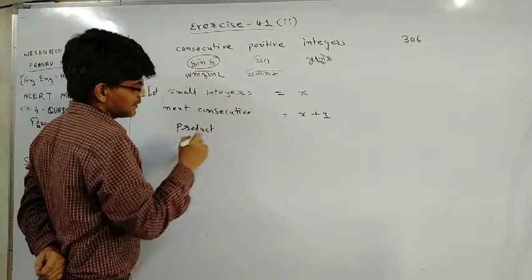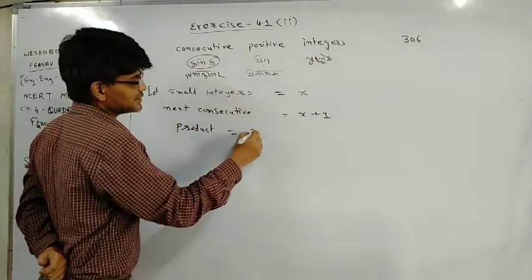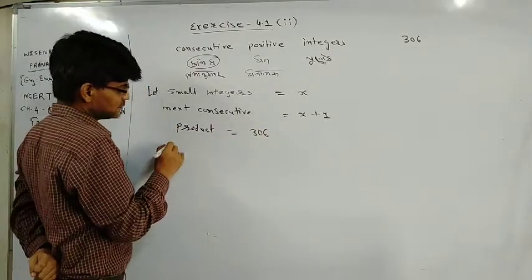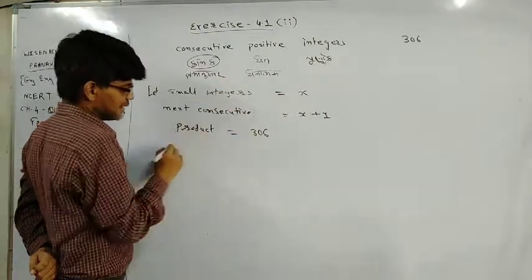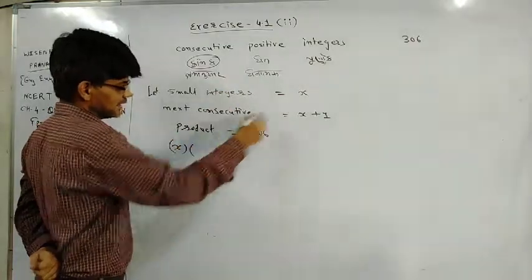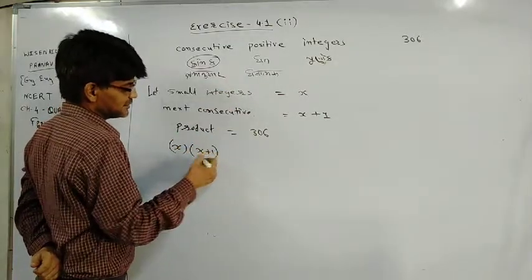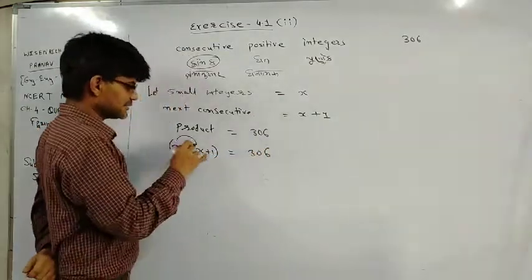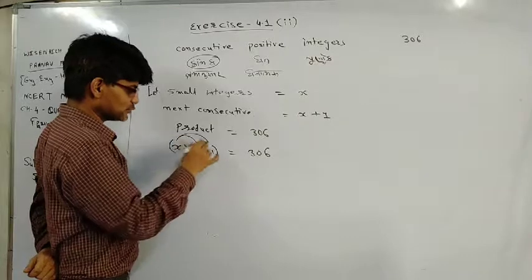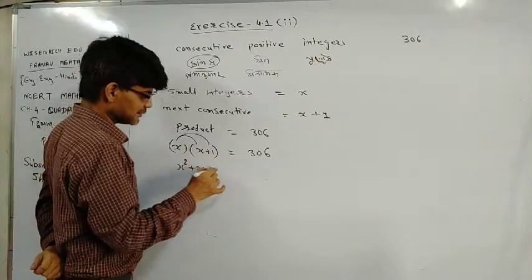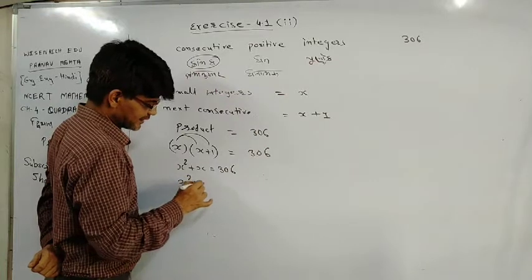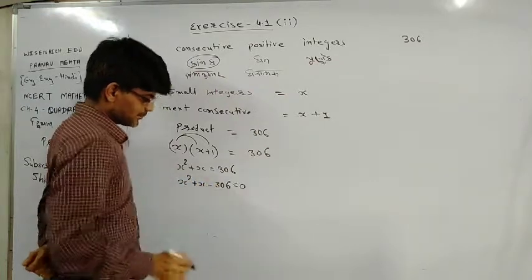These two numbers' product is given as 306. Product means gunanfal or gunakar. So the first integer x into second integer x plus 1 equals 306. x into x is x square, x into 1 is x, equals 306. So here x square plus x minus 306 equals 0.